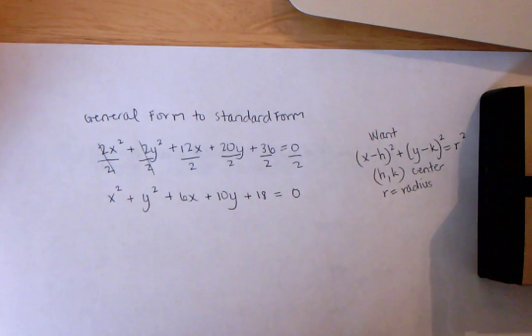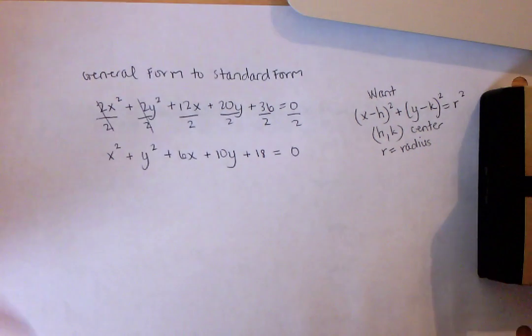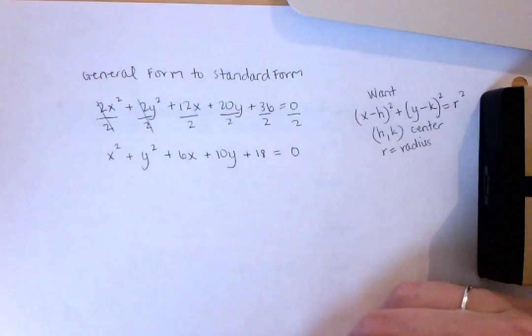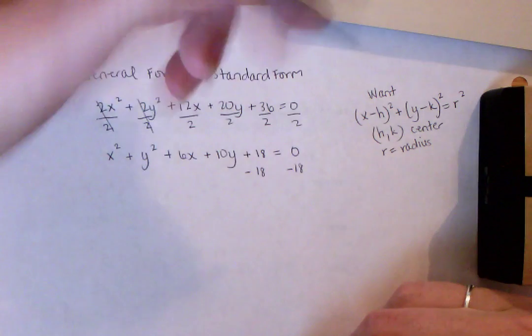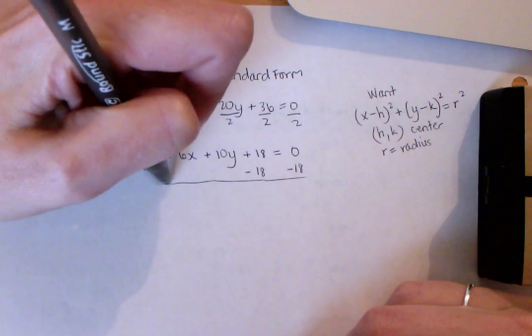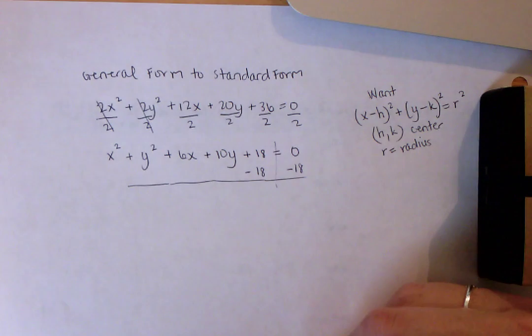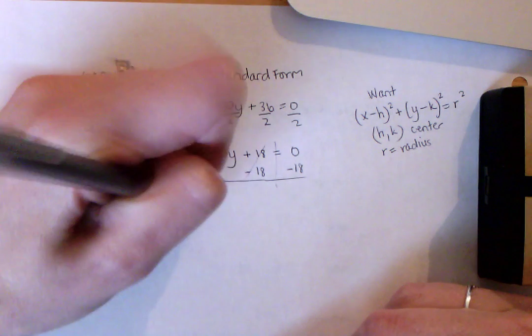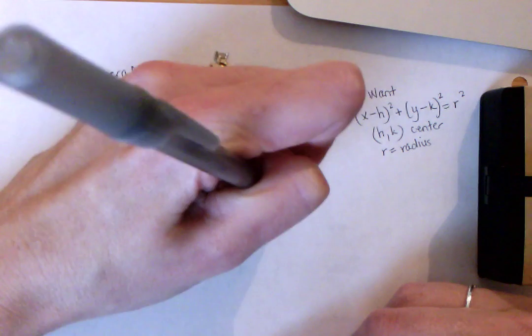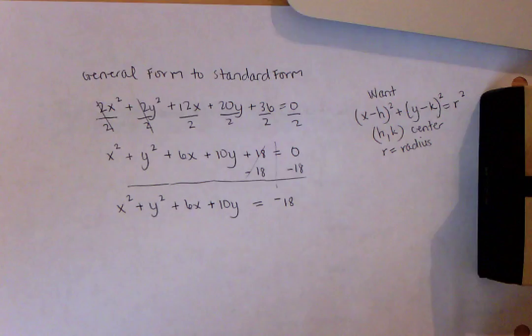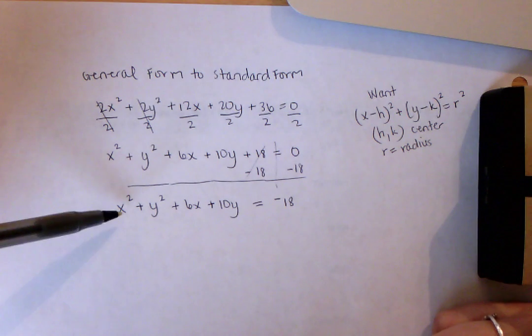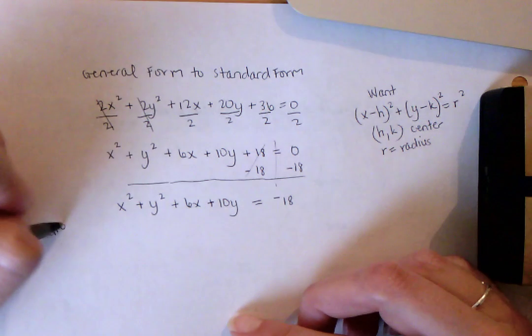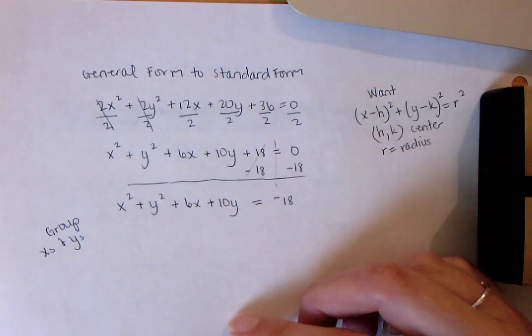Now I have it in the form that I want to complete the square. First thing we do with these equations, you want to start by subtracting the constant from both sides. We're going to subtract 18 from both sides of the equals sign. I'm going to rewrite this as x squared plus y squared plus 6x plus 10y equals negative 18. Don't worry about that negative, it should work out in the end.